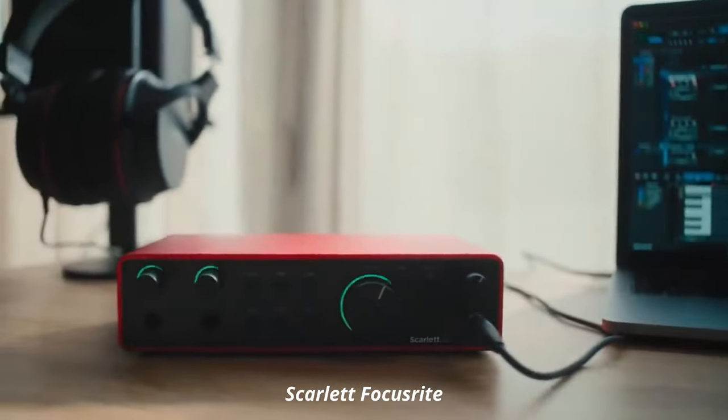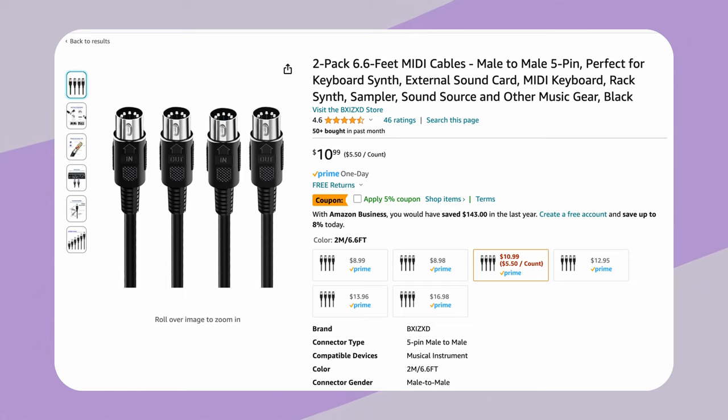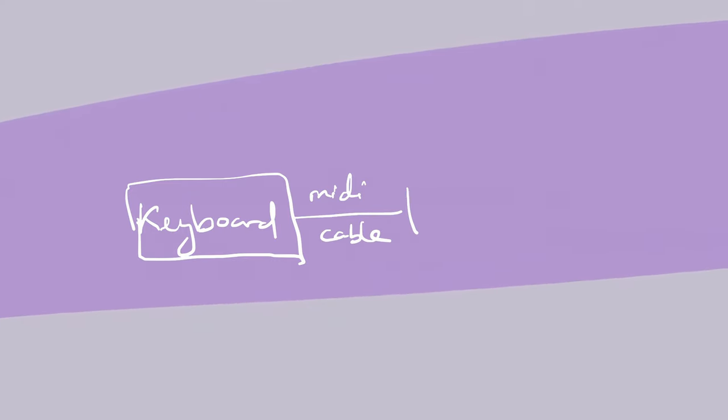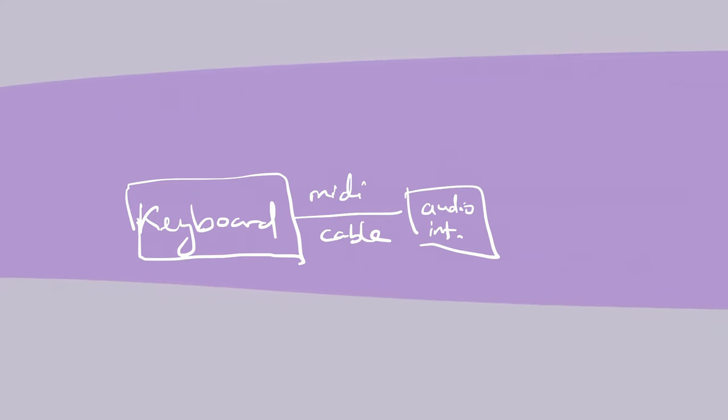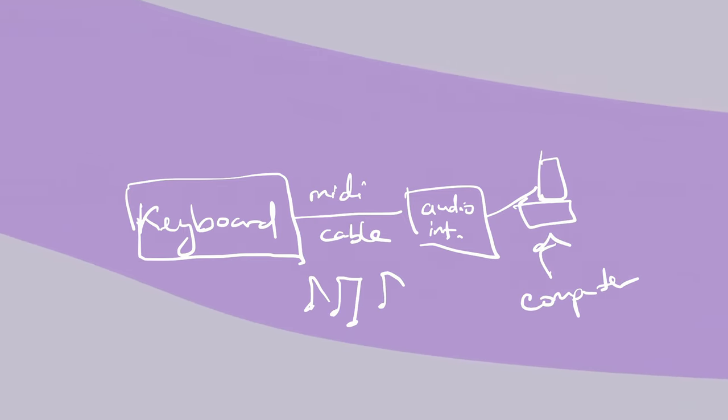Tool number two is going to be your audio interface. Your audio interface is going to act as a conduit to your computer and any other peripherals. A peripheral I use is a MIDI keyboard. This MIDI cable connects directly from the keyboard into the MIDI input on my audio interface, which then relays that information to my computer so I can play keyboard sounds straight into the computer.